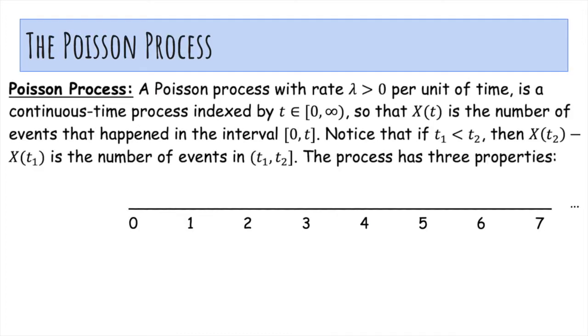So now we'll talk about Poisson process. A Poisson process with rate lambda greater than zero per unit of time is a continuous time process indexed by t from zero to infinity, such that X(t) is the number of events that happened so far in the interval zero to t. So if t1 is less than t2, then X(t2) minus X(t1) is the number of events that happened between t1 and t2. This process has three properties.